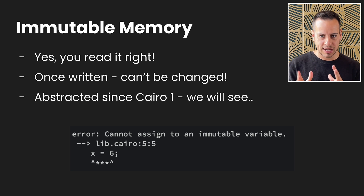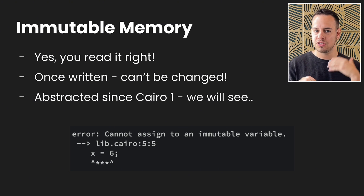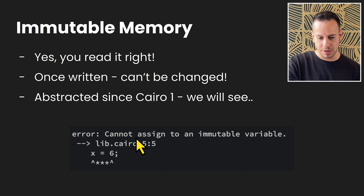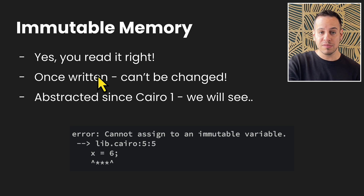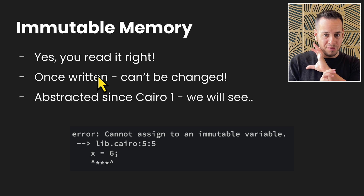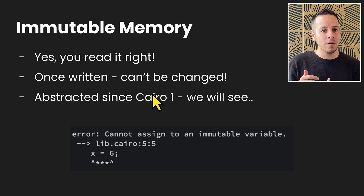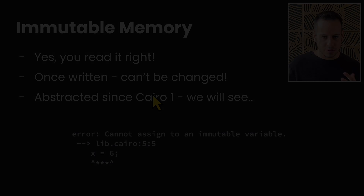The Cairo VM memory is immutable by default — you cannot change variables after you define them. As shown in this example, X equals six, and if we try to change X, we get an error because we cannot assign to an immutable variable. Once you write a variable, you cannot change its value — unless we are talking about Cairo 1 and Cairo 2, because they abstracted the whole immutability for us.